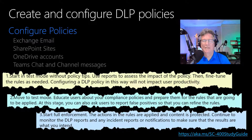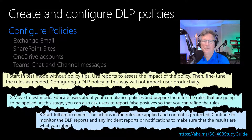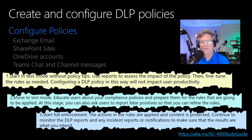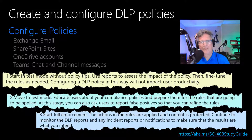What is the recommended process? First, start in test mode without enforcing the policy. Use the DLP reports and incident reports to assess the impact of your policy — try before you use it. You can view the number, location, type, and severity of policy matches, then fine-tune the rules as needed. This will not impact user productivity. Second, move to test mode with notifications and policy tips, which educates users about compliance policies and prepares them for the rules that will be applied. You can also ask users to report false positives to further refine the rules. Finally, step three: start full enforcement, where actions and rules are applied and content is protected.